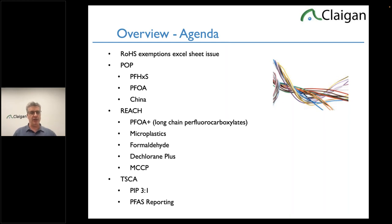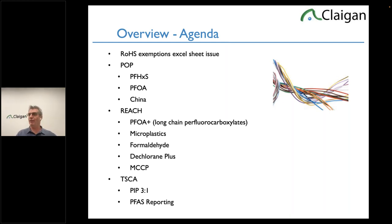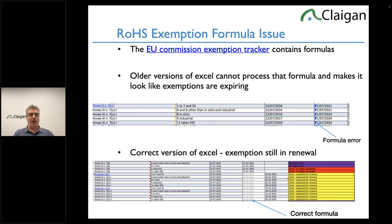Under REACH, I'll talk about longer versions of PFOA restrictions, microplastics, formaldehyde restriction, Dechlorane Plus, and MCCP restrictions. On the US side under TSCA, don't forget the phosphated flame retardant PIP 3:1 banned in late 2024, and also PFAS reporting — not a restriction, but very topical.